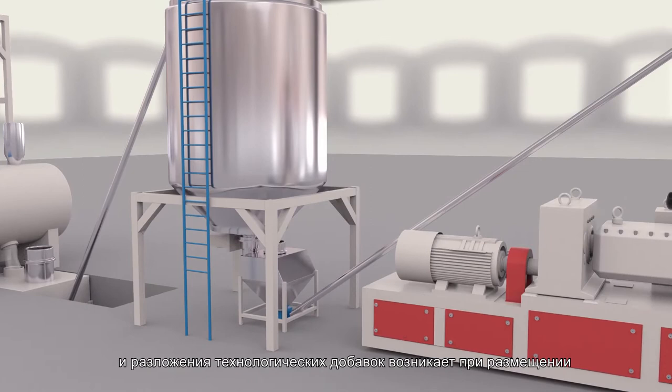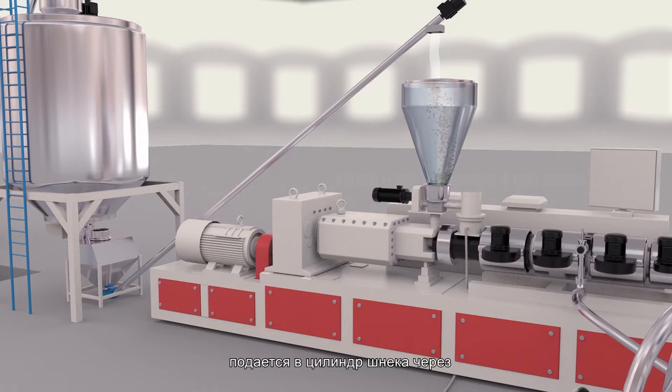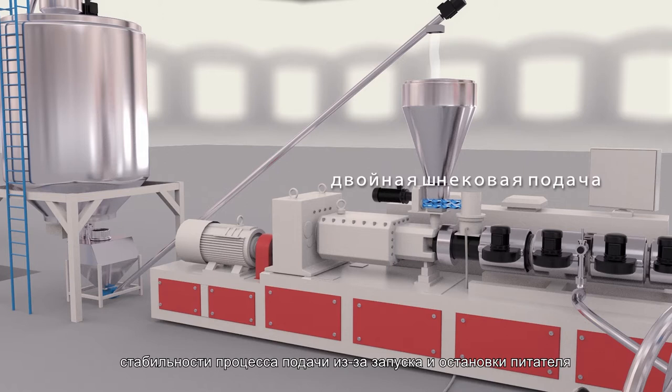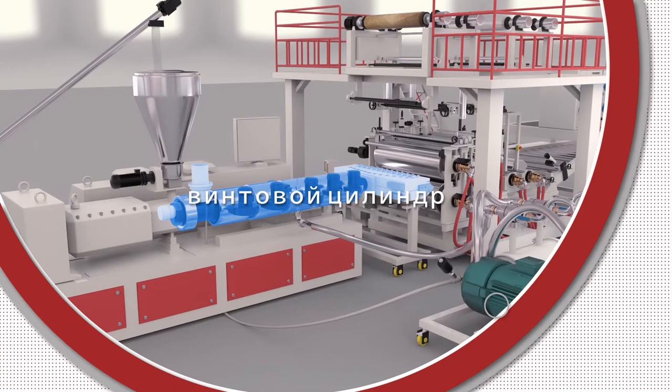The materials discharged from the cold roller are fed into the screw barrel by screw feeder at a constant speed, while double screw feeding can avoid the influence of the start and stop of the feeder on the stability of the feeding process.